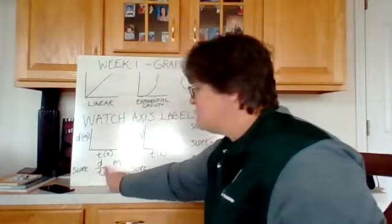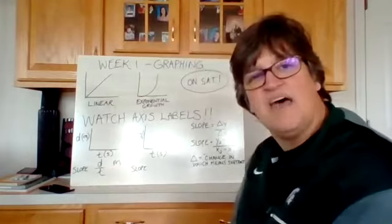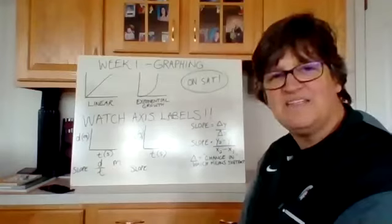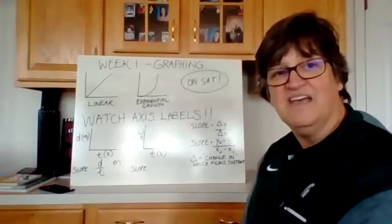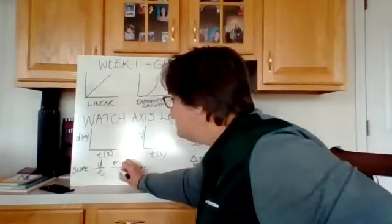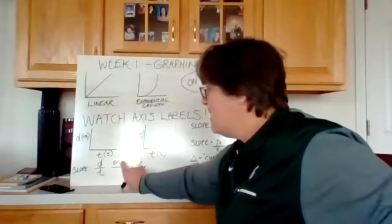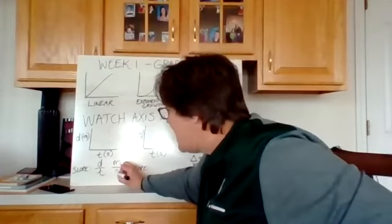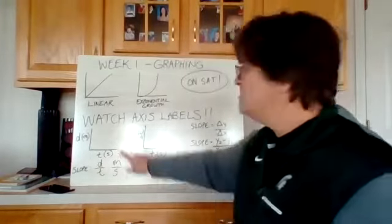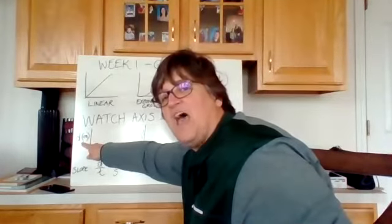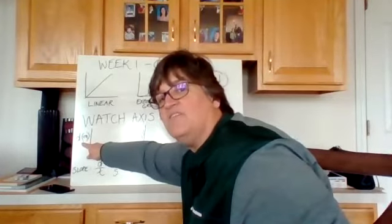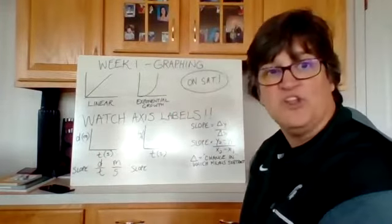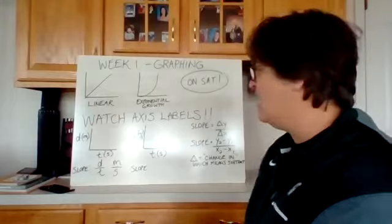And if you remember from our formulas that we reviewed at the beginning of this unit, distance divided by time equals velocity. And what were the units of velocity? The units of velocity were meters for distance and seconds for time. So this particular graph, if we had to do the slope of a line on this graph, it would be in meters per second, or the slope of a line would give us the velocity.